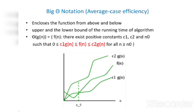Big Theta notation defines the average case efficiency and encloses the function from above and below — providing both the upper and lower bound of the running time of an algorithm. Θ(g(n)) = f(n) such that there exist positive constants c1, c2, and n₀ such that 0 ≤ c1·g(n) ≤ f(n) ≤ c2·g(n) for all n ≥ n₀.